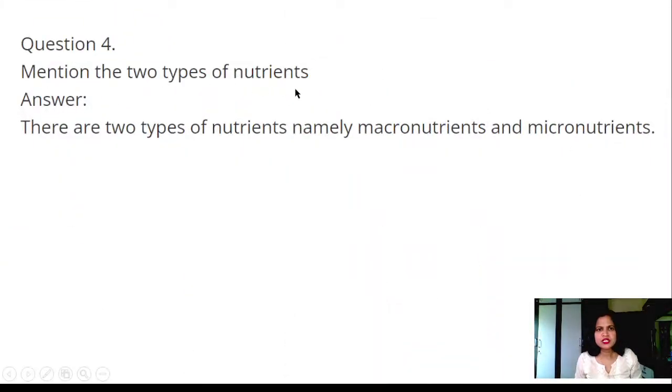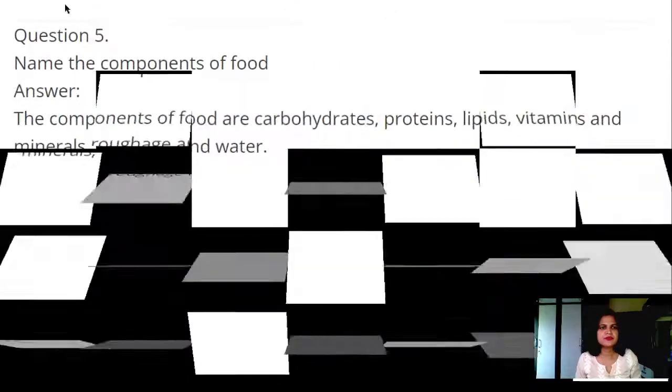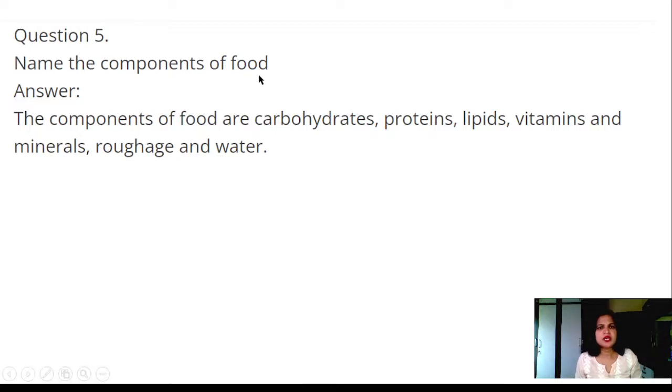Question 4: Mention the two types of nutrients. Answer: There are two types of nutrients, namely macronutrients and micronutrients. Question 5: Name the components of food. Answer: Components of food are carbohydrates, proteins, lipids, vitamins and minerals, roughage, and water.